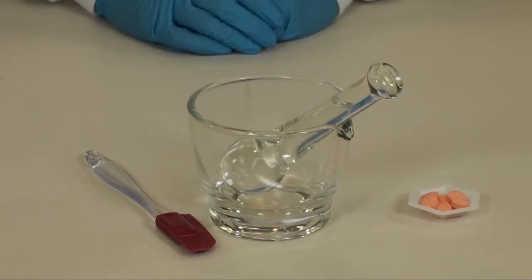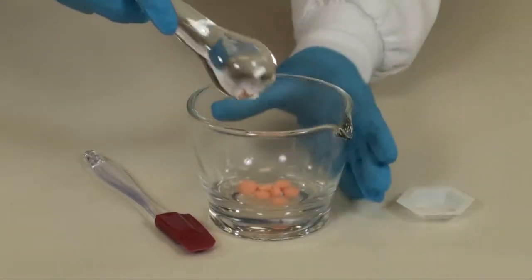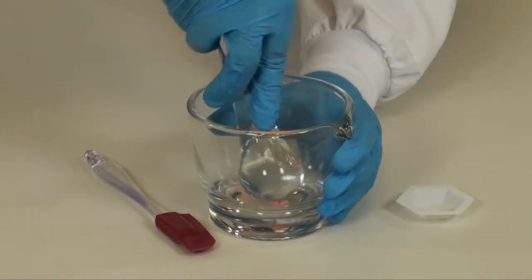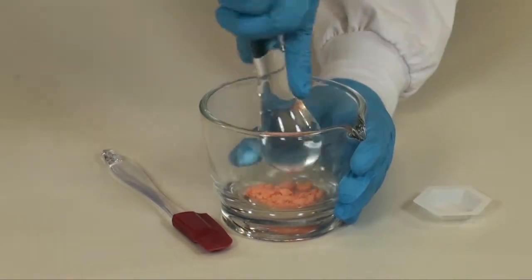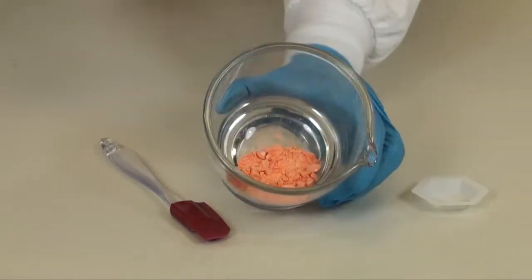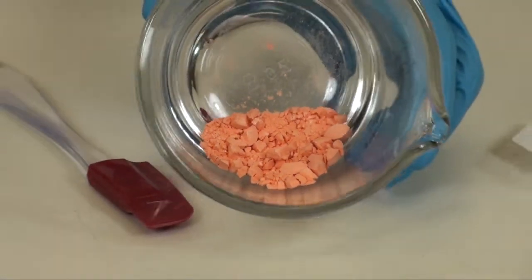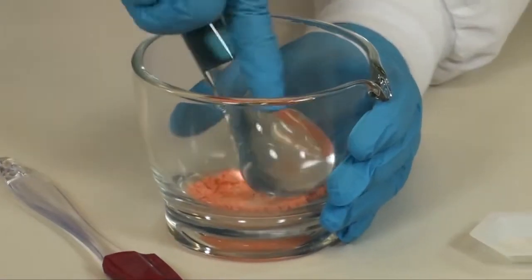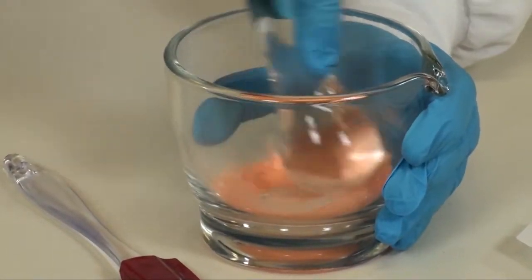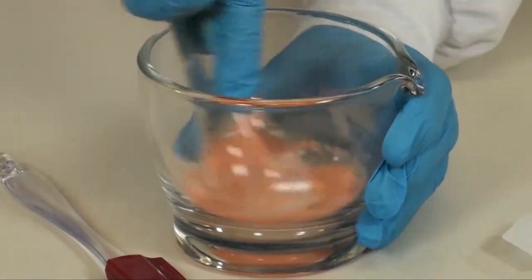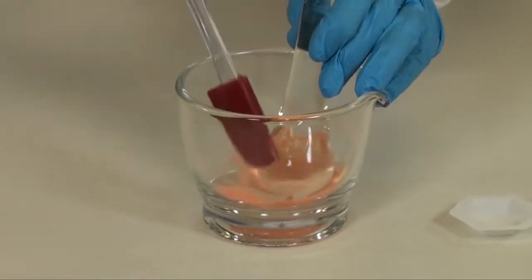Place the required number of allopurinol tablets in your mortar and triturate those to a fine powder, remembering to use a firm twisting motion to initially start the trituration process with the tablet. Continue to triturate until you have a very fine powder. If you need to move the powder down off the sides and back to the center of the mortar, use your rubber spatula.